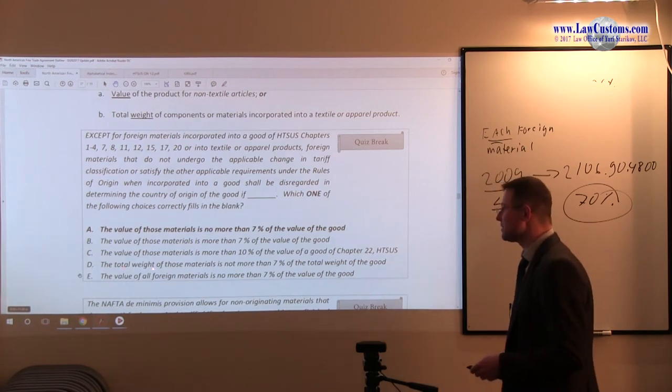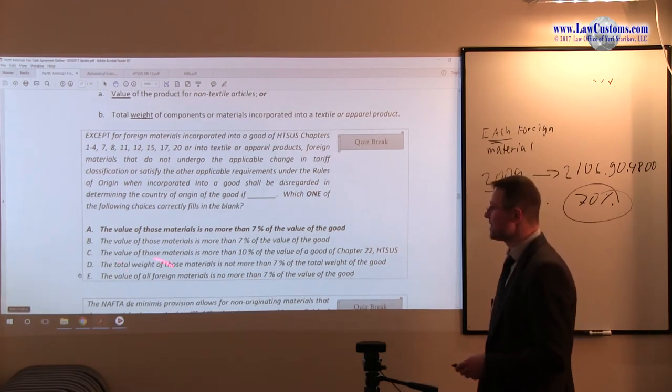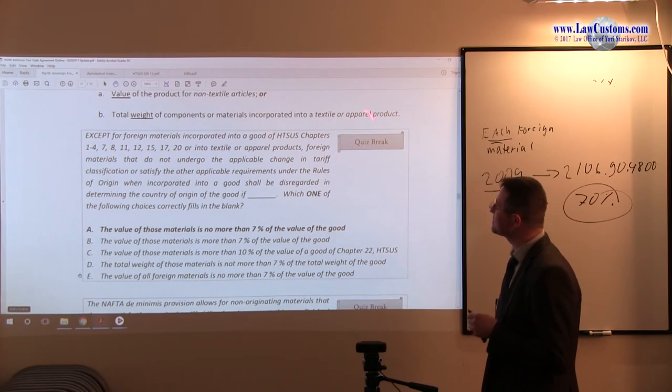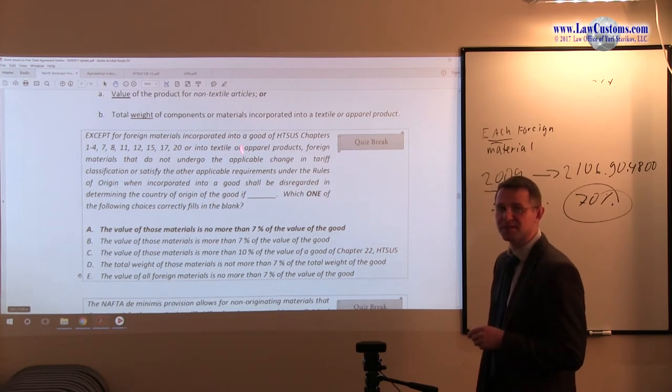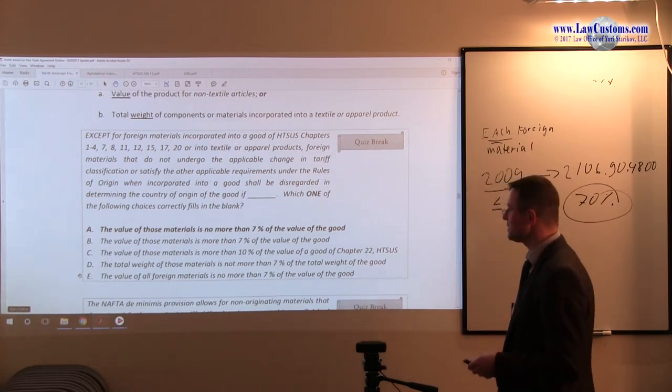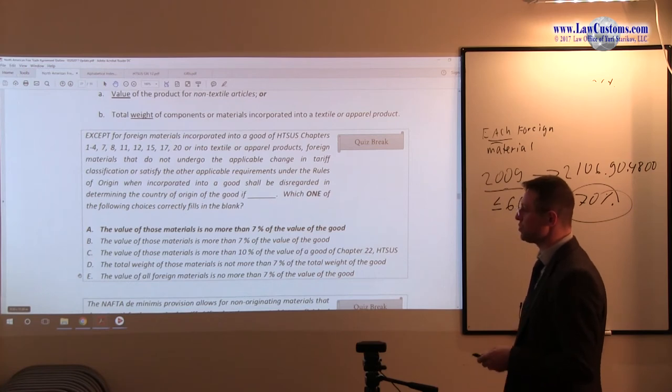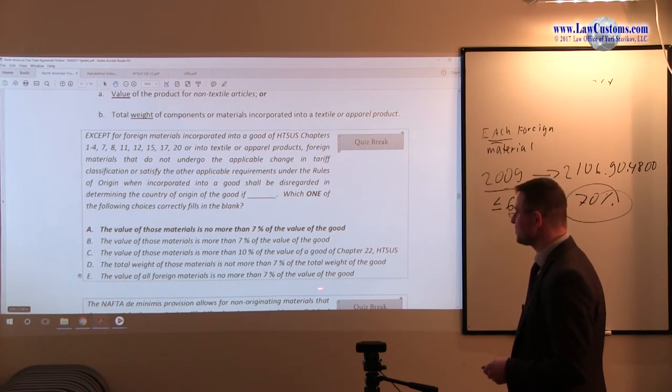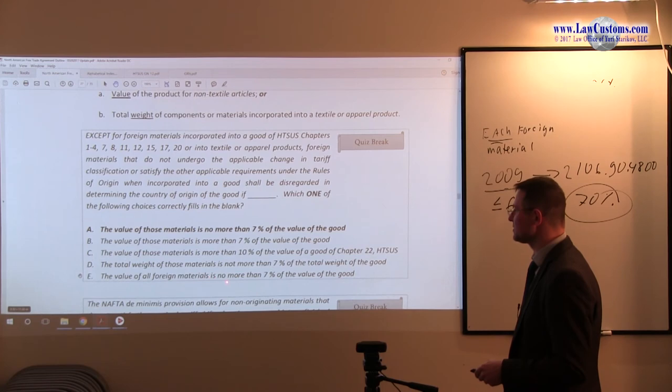The total weight of those materials is not more. So weight is applicable to textiles. And here we know that we are not talking about textiles because customs examiners explicitly exclude textiles from the fact pattern. So D is not correct. And E, the value of all foreign materials is no more than 7% of the value of the good. Well, all foreign materials?